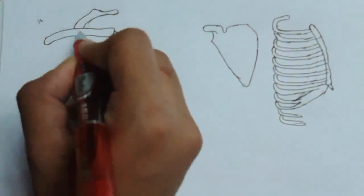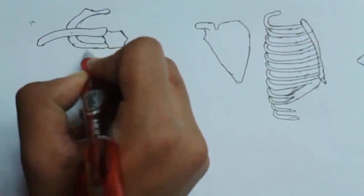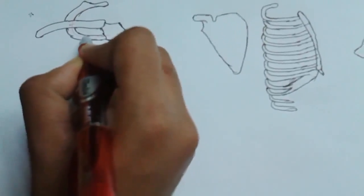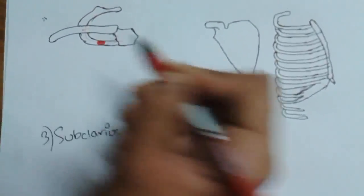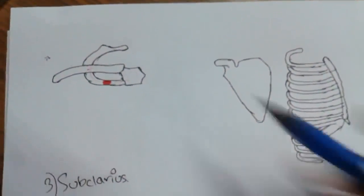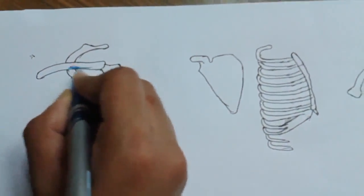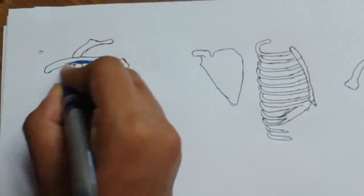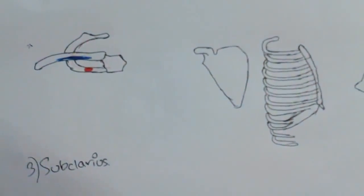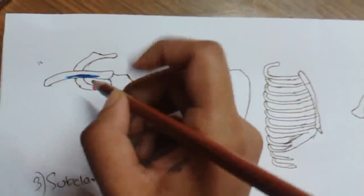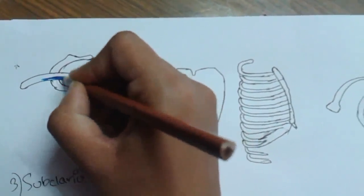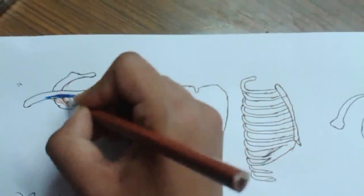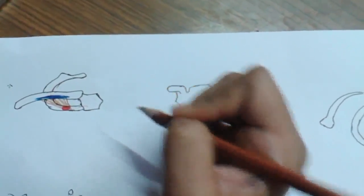The origin of subclavius is from the first rib. This is the first rib, this is the sternum, and this is the clavicle. The insertion is to the inferior surface of the clavicle — specifically into a groove called the subclavian groove. So the muscle originates from the first rib and goes upward, inserting into the subclavian groove of the clavicle.